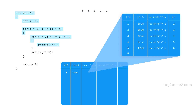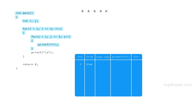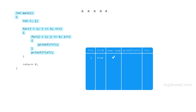Now when it checks whether j is less than or equal to five, the condition is not satisfied. So the control comes out of the for loop, prints a new line character, and increments i — i becomes two. The first iteration of the outer loop is completed and what we got is a row of five stars.